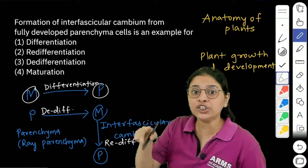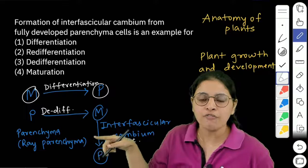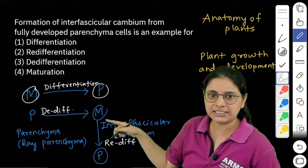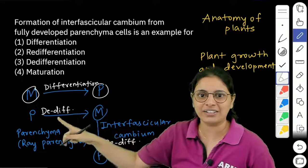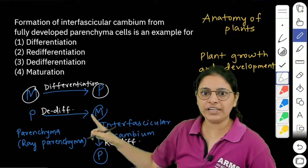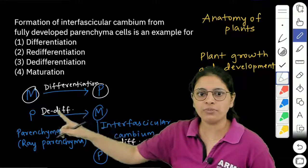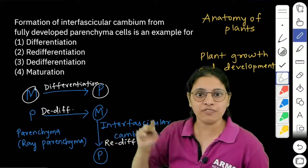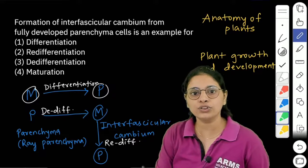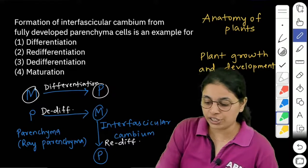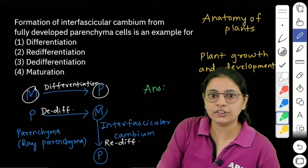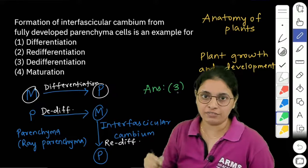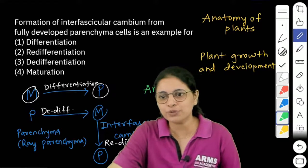Question mein aapko puchha hai, formation of interfascicular cambium from fully developed parenchyma cells. Matlab wo is process ki baat kar rahe hai. Yes, formation of interfascicular cambium from the parenchyma. So this is obviously an example of de-differentiation. So humara answer ho jayega option number 3. Answer is option number 3, de-differentiation. I hope this helps you. Thank you.